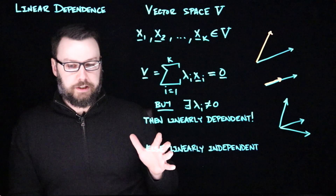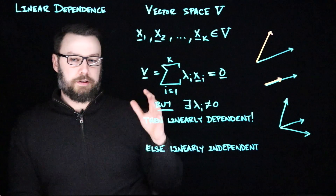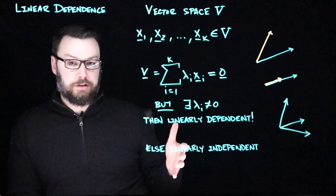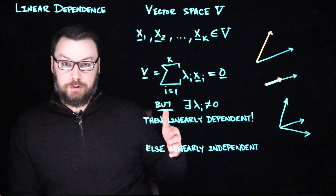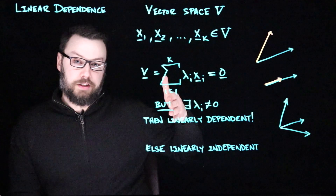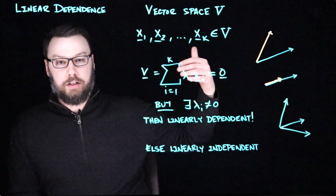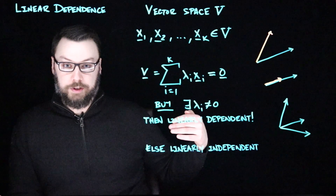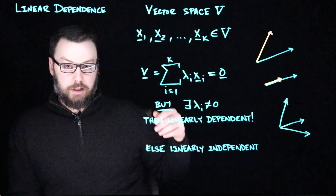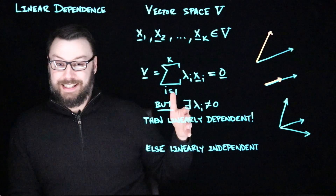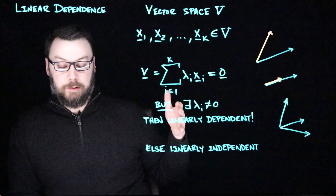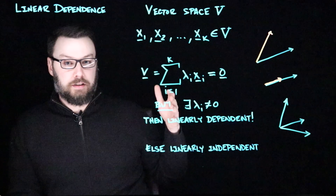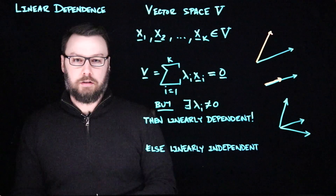Checking for linear dependence in a particular set of vectors can be done via Gaussian elimination. You make a matrix in which each of the vectors is a column and try to put it into row echelon form. If after doing that there is any column that doesn't have a pivot in it, then the set is a linearly dependent set of vectors.